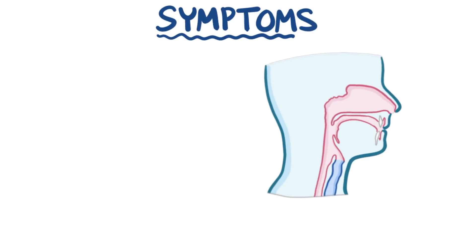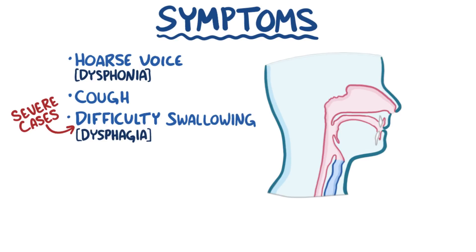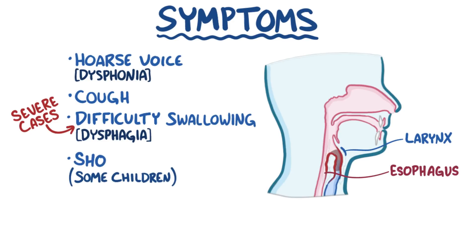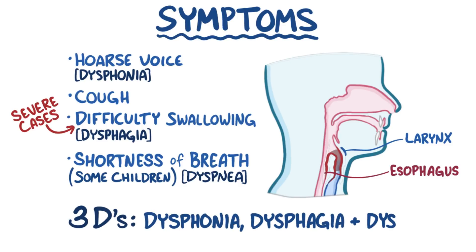The main symptoms of laryngitis include hoarse voice or dysphonia, as well as cough, and in severe cases it can lead to difficulty swallowing or dysphagia, because the swollen larynx might compress the esophagus. Some children have shortness of breath or dyspnea, since they have smaller airways. So laryngitis comes down to the three Ds: dysphonia, dysphagia, and dyspnea.